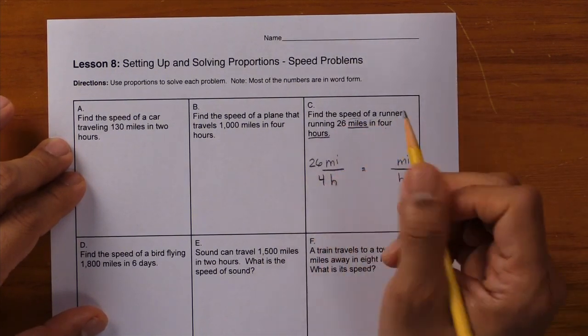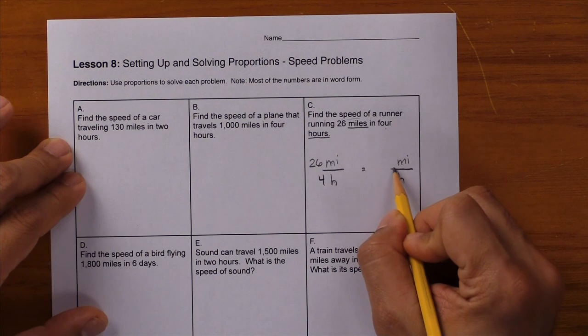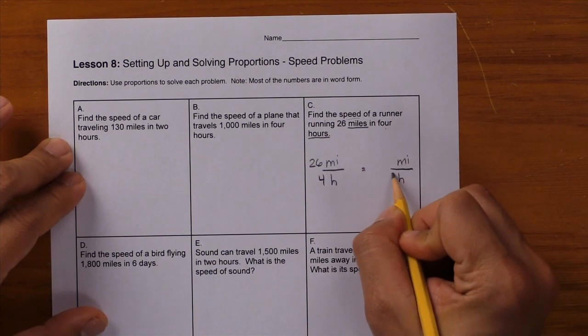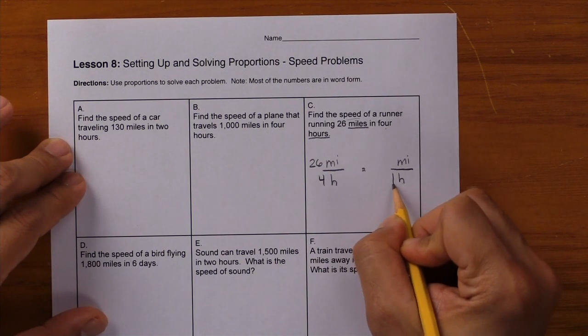They're looking for miles per hour in this example, or miles per one hour. And that's the missing value.